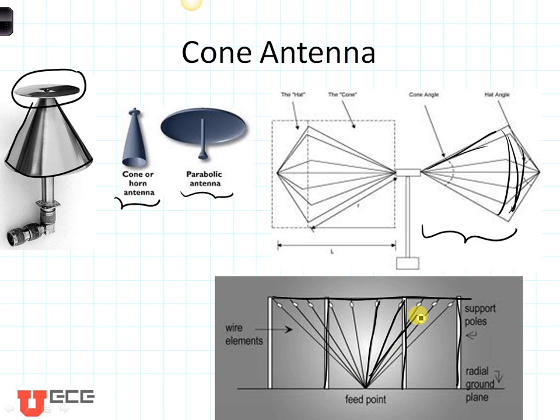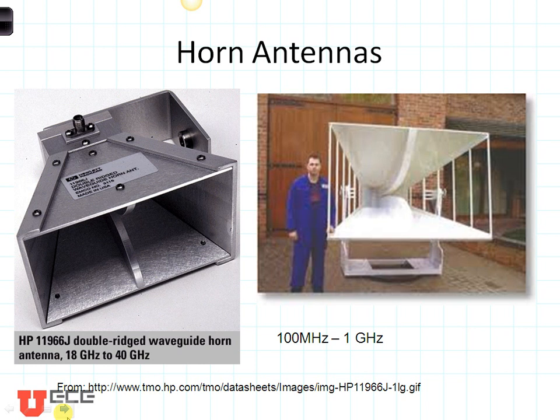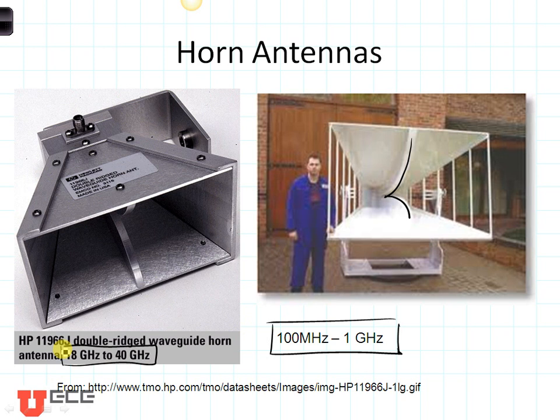Another type of broadband antenna is a horn antenna. These horns have a flange in the center that increases their bandwidth. This one is particularly broadband, going from 100 MHz to 1 GHz. The horn shown here on the left goes from 18 to 40 GHz.